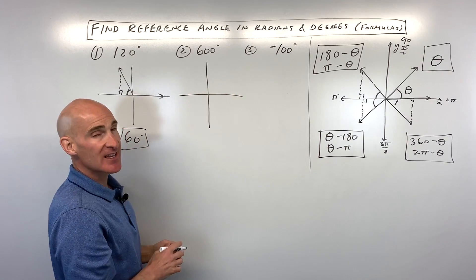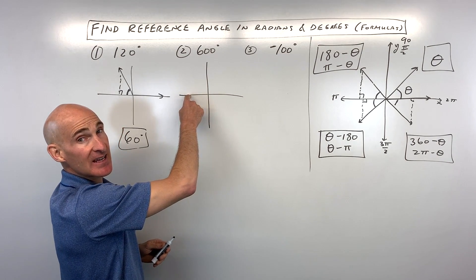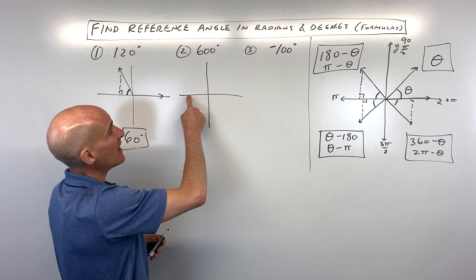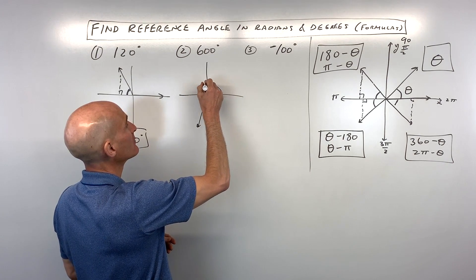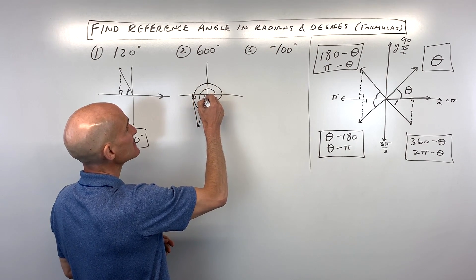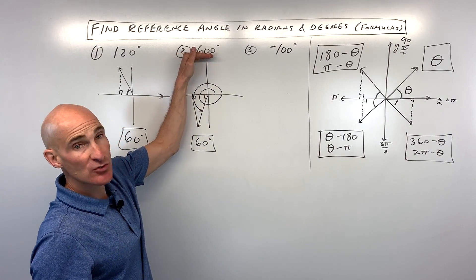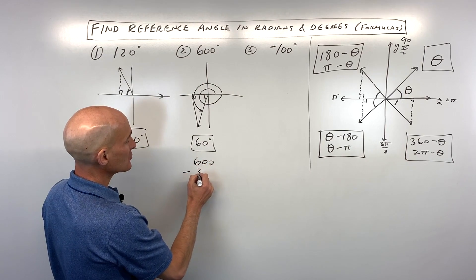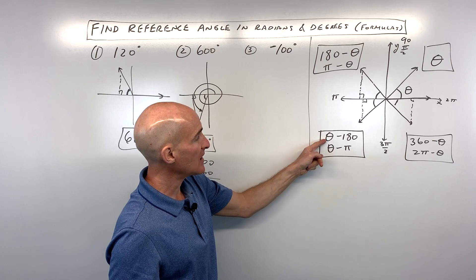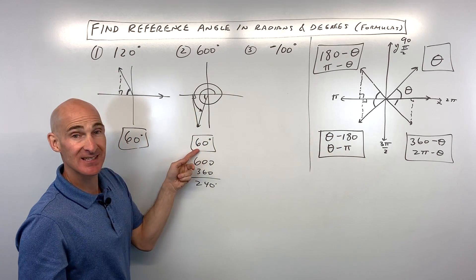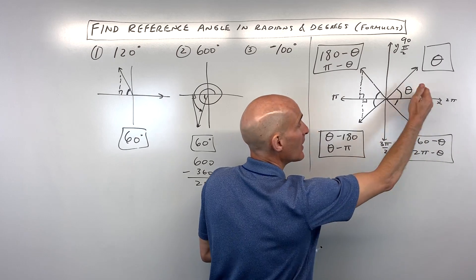For number two, let's look at 600 degrees. 360 plus 180 is 540, plus another 60 puts you at 600. So we went all the way around and a little bit more. When we drop a perpendicular to the x-axis, the angle between the terminal ray and the x-axis is 60 degrees. Another way: subtract 360 from 600 to get 240 degrees, which is in the third quadrant. Using the formula, 240 minus 180 is 60 degrees. Note these formulas work best when the angle is positive and between 0 and 360.